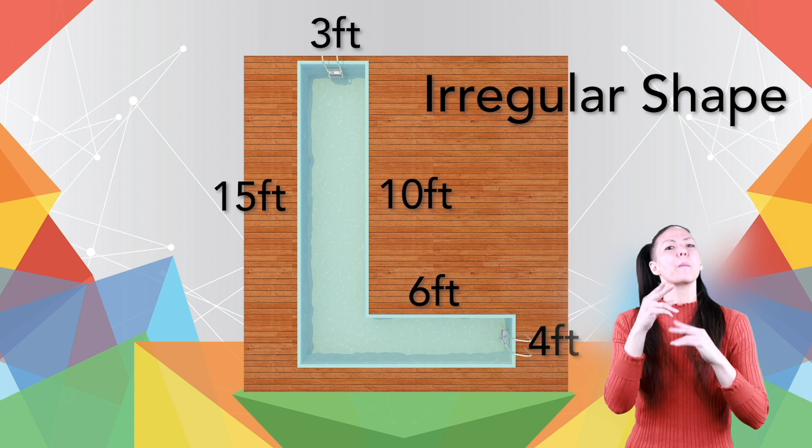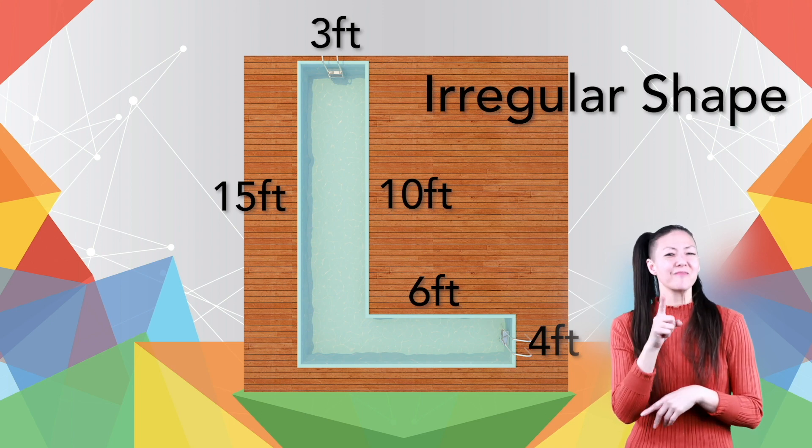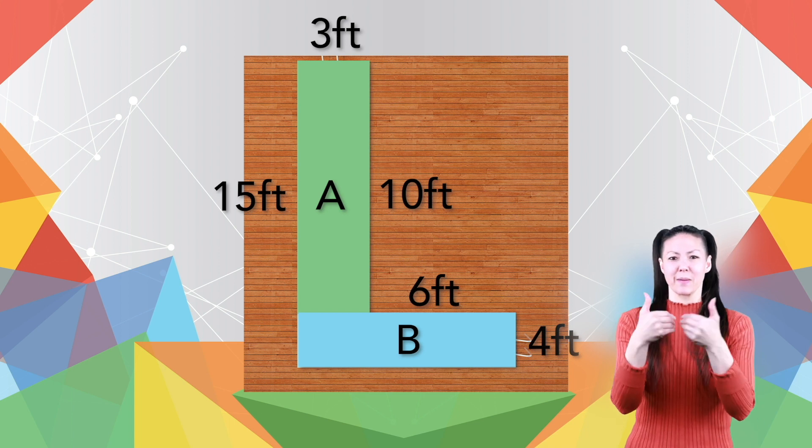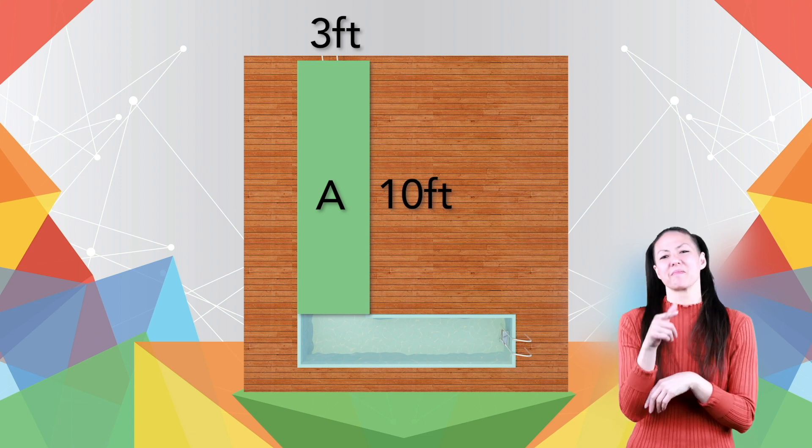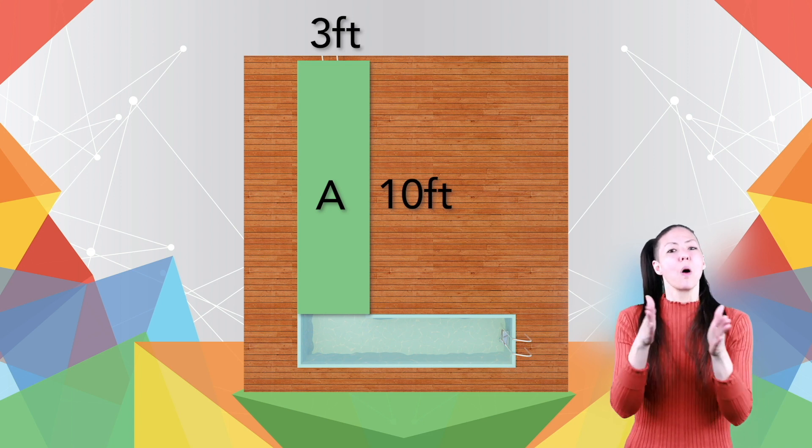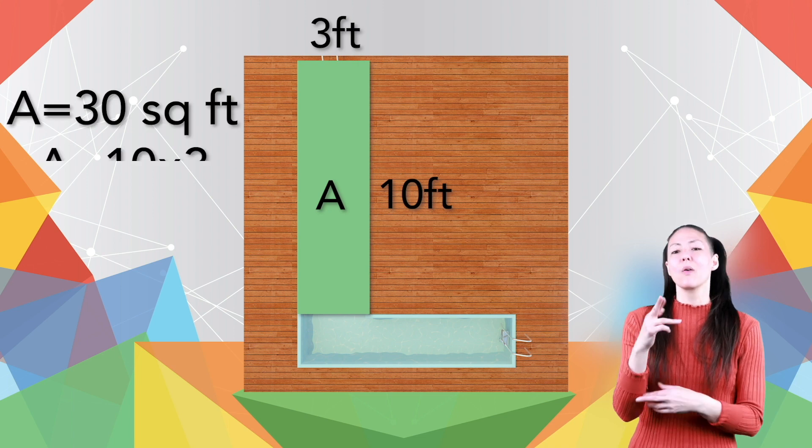If you said two rectangles, you are exactly right. Separate the swimming pool down into these two rectangles. Rectangle A has a length of 10 feet and a width of three feet. Its area is 30 square feet, or 10 times 3.